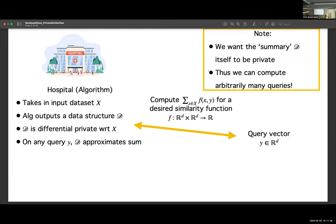And the really key point is we want the summary or this data structure d to itself be private. So we can post it on Twitter if we want to. We can post a description of d on Twitter. And that's really important because that actually will allow us to compute arbitrarily many queries. If the data structure itself is private, then we can just compute as many queries as we want. So we can keep using it for the next five months or year and so on.